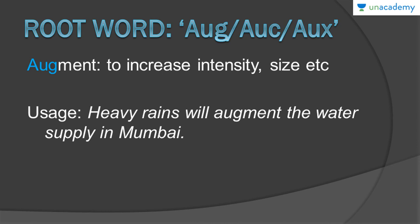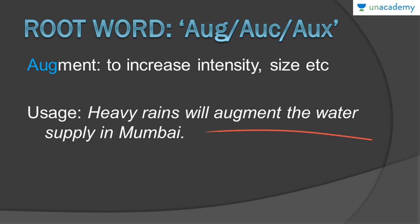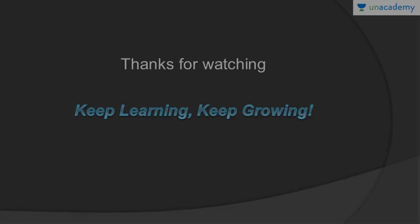Our next word is AUGMENT, containing the root word AUG. AUGMENT basically means to increase the intensity or the size of something — in any way, it means to increase. For example: 'Heavy rains will augment the water supply in Mumbai.' When heavy rains happen, there is an extra supply of water which removes the scarcity, so the heavy rains will augment — that is, increase — the water supply in Mumbai.